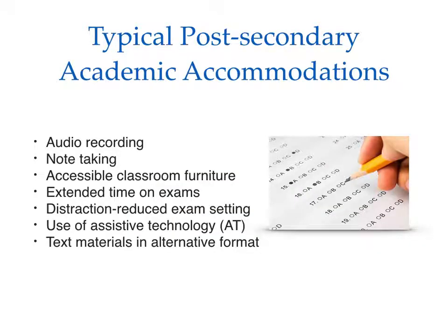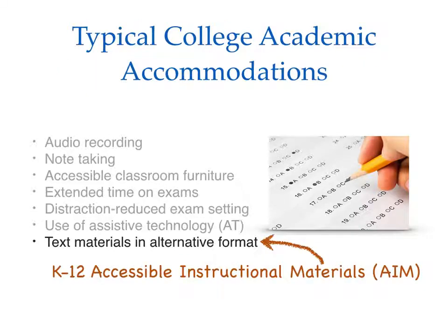Academic accommodations in the post-secondary setting are designed for equal access. Disability support providers work interactively with students to determine reasonable accommodations based on a combination of documentation and interviews with the student, family, and relevant specialists. Typical accommodations include audio recording of lectures, note-taking services, accessible classroom furniture, extended time on exams, a distraction-reduced exam setting, use of assistive technology, or AT, and text materials in alternative format. This final example, alternative format, is the post-secondary term for what we call Accessible Instructional Materials, or AIM, in K-12.